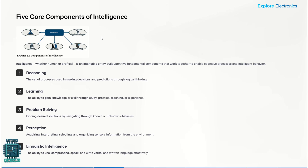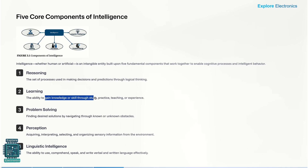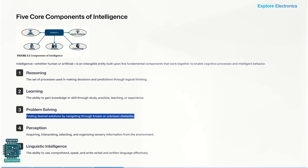Even if a machine wants to get intelligence, these are the five areas it should work on. The first one is reasoning — a set of processes used in making decisions or predictions through logical thinking. The second core component is learning: the ability to gain knowledge or skills through study, practice, or teaching by experience. The third is problem solving: finding the desired solution by navigating through known or unknown obstacles.